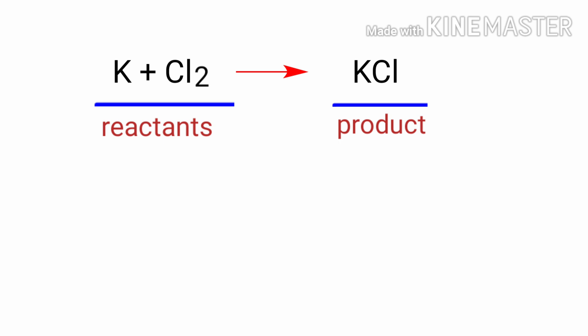In this equation, the reactants are Potassium and Chlorine and the product is Potassium Chloride. If you look at this equation, the equation is not balanced.